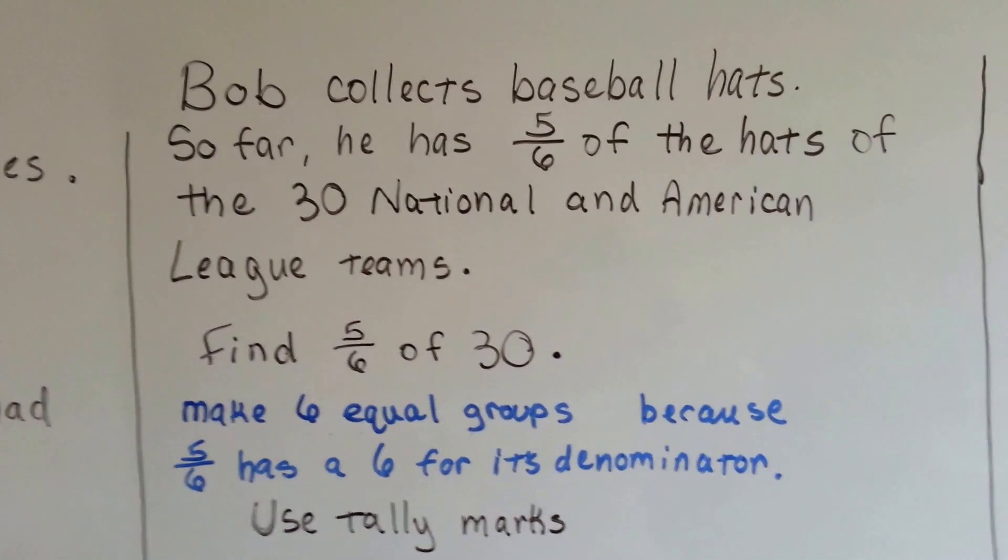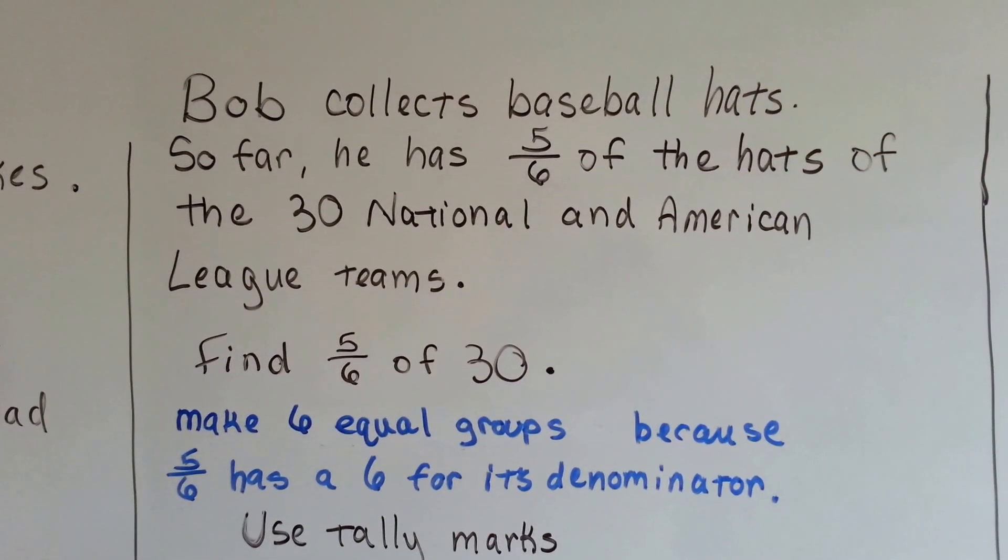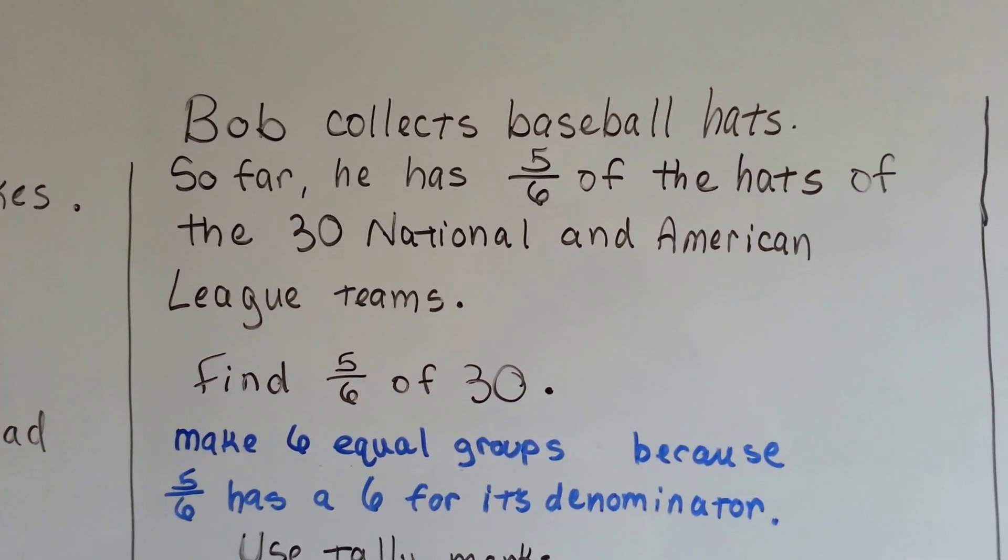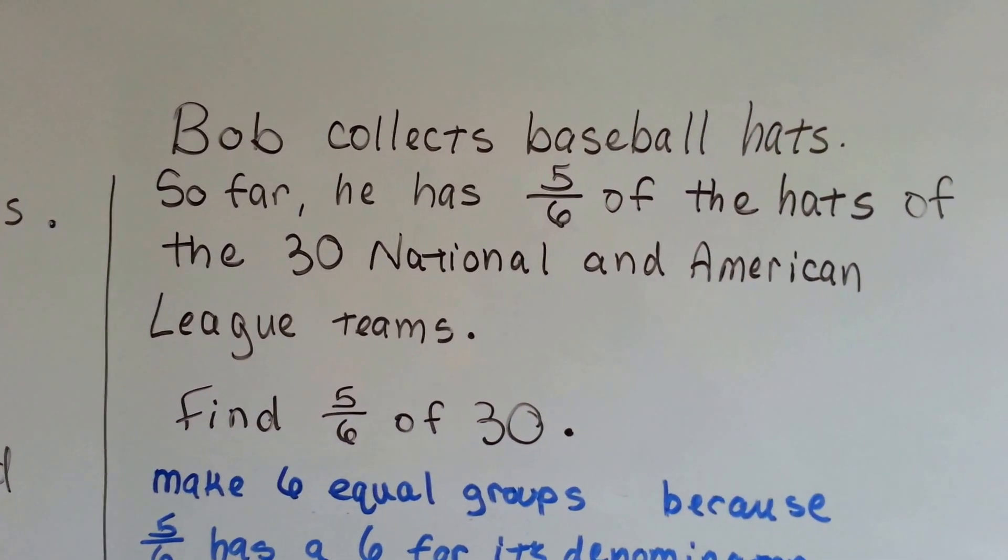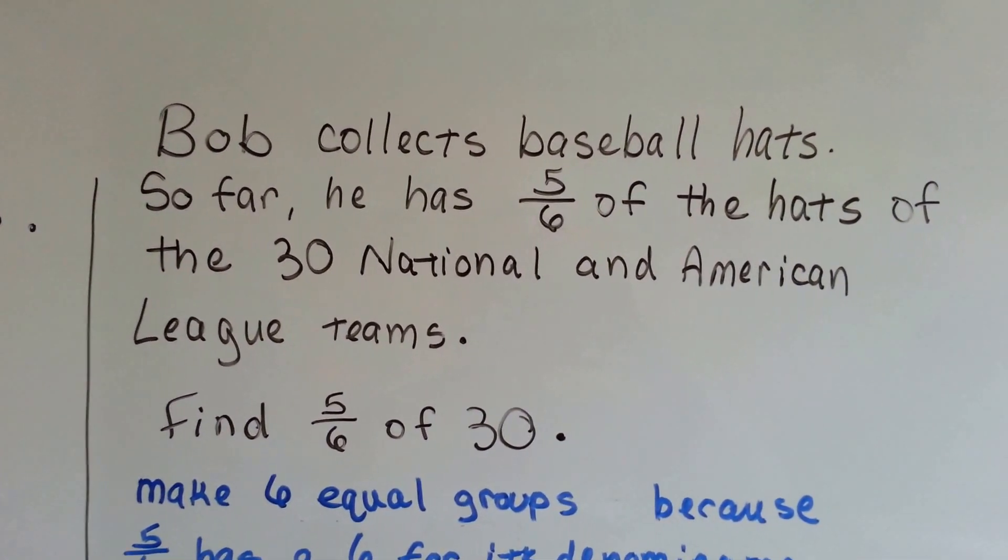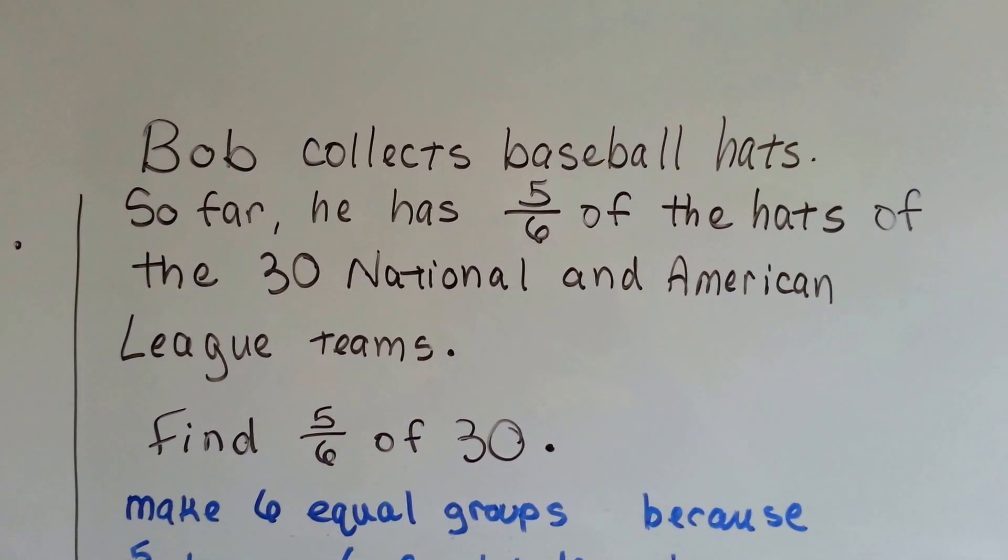Bob collects baseball hats. So far he has five-sixths of the hats of the 30 National and American League teams. So he's missing some, isn't he? So how many of the hats does he have if he's got five-sixths of them?